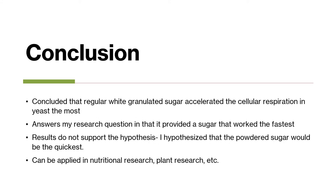In conclusion, regular white granulated sugar accelerated cellular respiration in yeast the most. This answered my research question by identifying which sugar worked the fastest. My results did not support my hypothesis — I had hypothesized that powdered sugar would be quickest due to its greater surface area, but that was not the case. The regular sugar worked the best, and this can be applied in nutritional research, plant research, baking, etc.